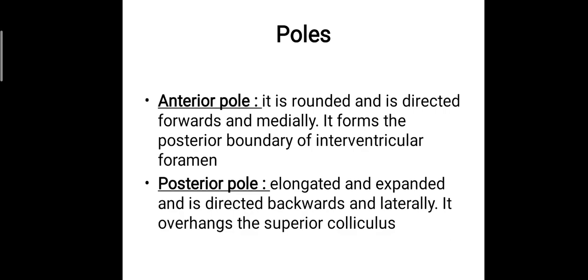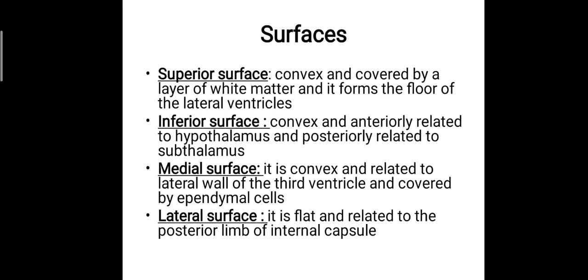The anterior pole is rounded and directed forwards and medially, and it forms the posterior boundary of the interventricular foramen. The posterior pole is elongated and expanded, directed backwards and laterally, and it overhangs the superior colliculus. The superior surface is convex, covered by a layer of white matter, and forms the floor of the lateral ventricles.